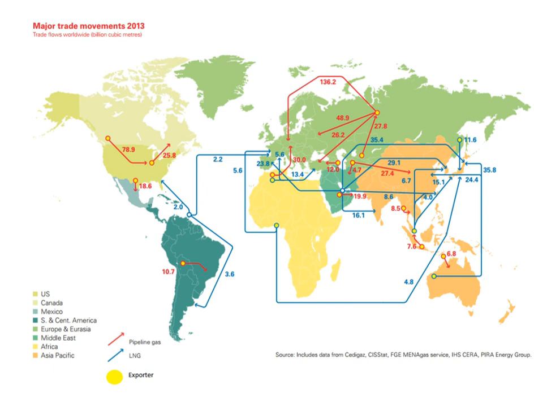Hydrogen has many applications: it is a primary feedstock for the chemical industry, a hydrogenating agent, an important commodity for oil refineries, and the fuel source in hydrogen vehicles. Protein-rich animal and fish feed is also produced by feeding natural gas to methylococcus capsulatus bacteria on a commercial scale.